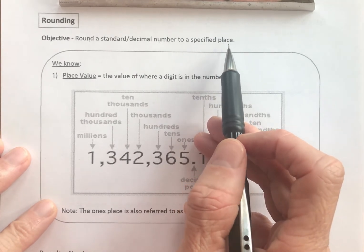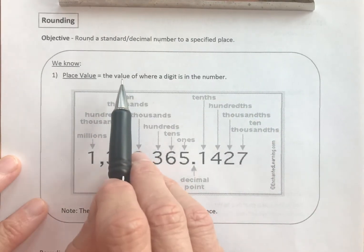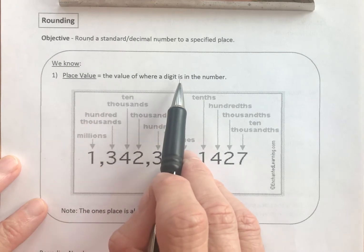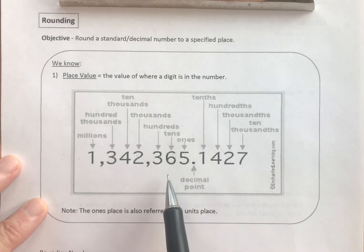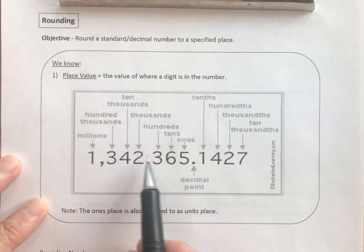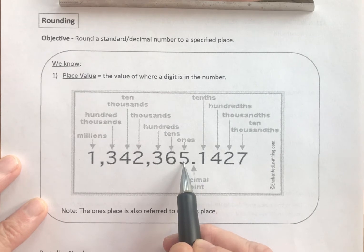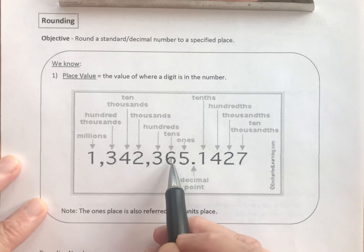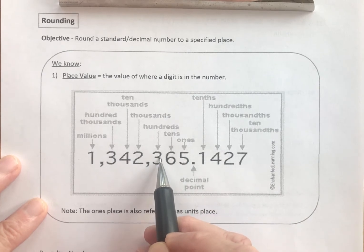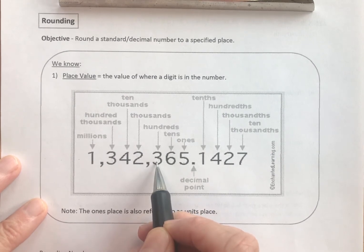What do we come into this video already knowing? Well, we know what place value is. Place value is the value of where a digit is in the number, and it's determined by where the number is in relationship to the decimal point. As you go to the left of the decimal point, the first place is the ones place, also called the units place, and then you go to the tens place, the hundreds place. For example, the three in the hundreds place means that this number's value is 300.